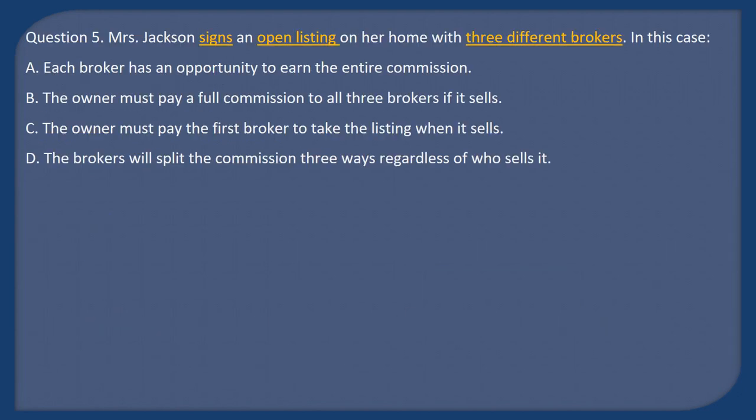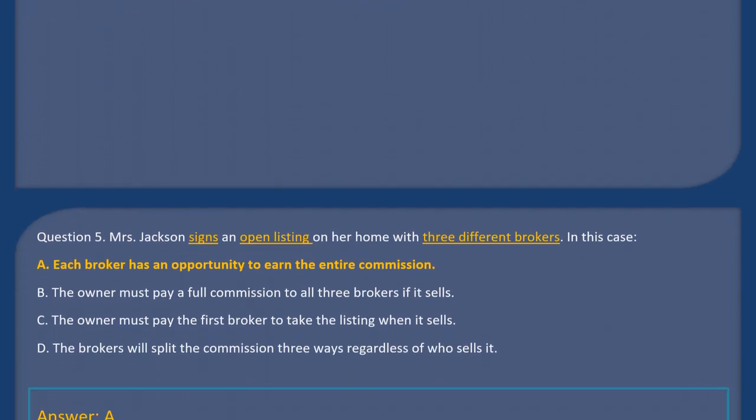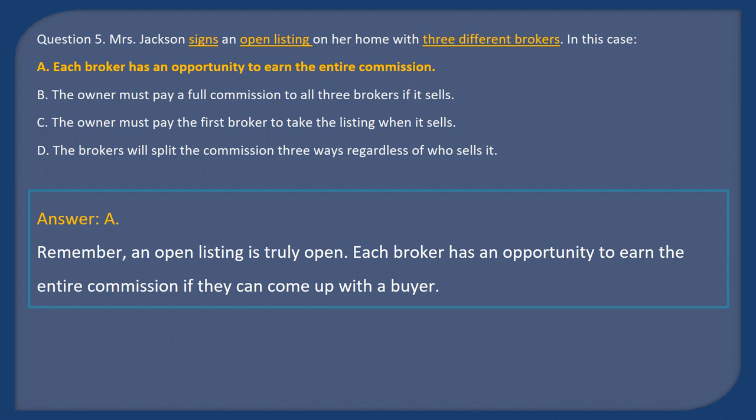Question 5: Mrs. Jackson signs an open listing on her home with three different brokers. A) Each broker has an opportunity to earn the entire commission, B) The owner must pay a full commission to all three brokers if it sells, C) The owner must pay the first broker to take the listing when it sells, D) The brokers will split the commission three ways regardless of who sells it. Answer: A. An open listing is truly open — each broker has an opportunity to earn the entire commission if they find a buyer.